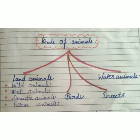Here we will discuss about kinds of animals: land animals, birds, insects, and water animals. Land animals are further divided into wild, pet, domestic and farm animals.